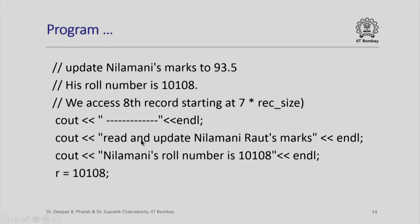Here is another example of updating the record of a particular student. For example, I wish to update Nilamani Rauch's marks to 93.5. You will recall his marks were 91.5. His roll number is 10108. We access the eighth record starting at 7 times rec_size. How do we understand this?